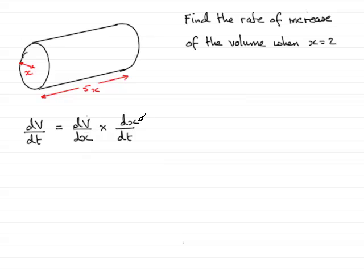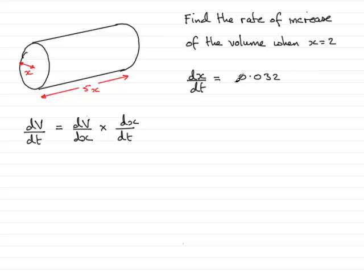Now, we already know dx by dt. We worked that out in the previous part of the question. Just to remind you, dx by dt — the rate of change of the radius — at any time t was given by 0.032 all divided by 2 pi x. So I can pop that in here when the time comes.